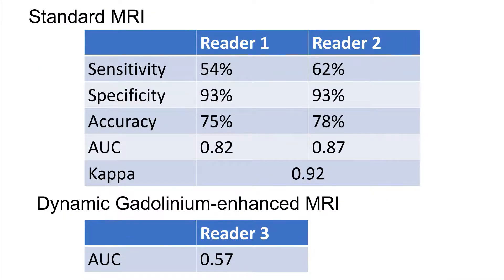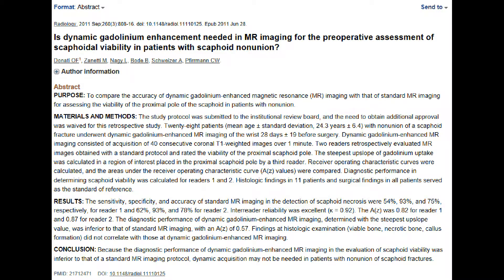Standard MRI for scaphoid necrosis showed a sensitivity of 54%, specificity of 93%, and an accuracy of 75% for reader 1, with similar results for reader 2. The inter-reader agreement was excellent with a kappa value of 0.92. The area under the curve was 0.82 for reader 1 and 0.87 for reader 2. The slope of gadolinium uptake was actually worse than standard MRI for vitality assessment, with an AUC of only 0.57. Histopathology findings also did not correlate with dynamic gadolinium enhancement. They concluded that dynamic gadolinium-enhanced MRI does not improve diagnostic performance.